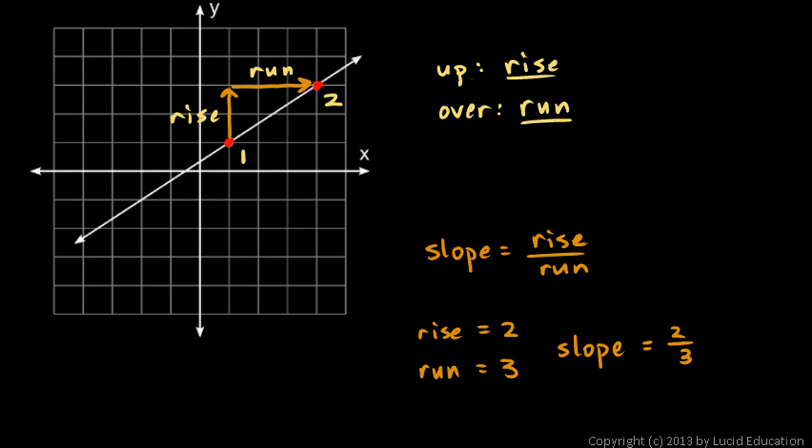But you could pick any two points you want. For example, I could have called this point right here point 1, and this point right here point 2, and could calculate a rise and a run. And it would still be the same ratio, 2 over 3.